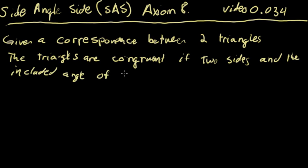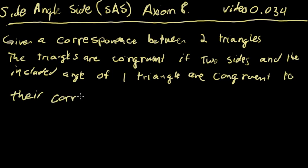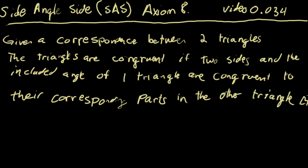The triangles of one triangle are congruent to their corresponding parts in the other triangle. And that's the end of our definition.